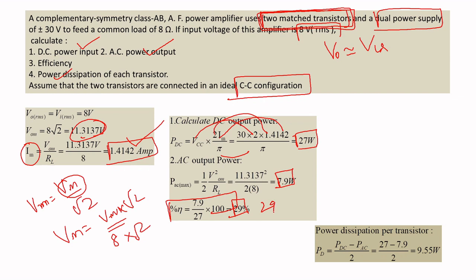The 29% efficiency is very poor for this circuit. The efficiency can be improved by modifying the circuit. Power dissipation per transistor is (P_dc − P_ac) / 2 = (27 − 7.9) / 2 = 9.25 watts per transistor.